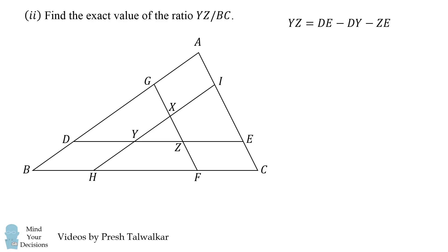Well, we do know that YZ is equal to DE minus DY minus ZE. We just proved that DY is equal to ZE, so we can then say this is equal to DE minus 2 times ZE.